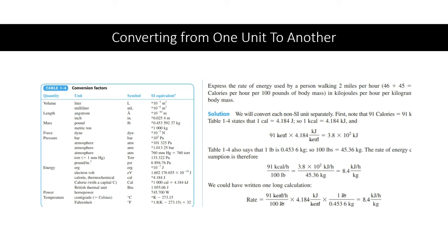Converting from one unit to another can be problematic if you're not given a table for units that are not based on multiples of 10. For example, in pressure and temperature, you have bar and atmosphere — those are clearly not based on multiples of 10, which is the prefix system we talked about. Instead, they have their own numbers that are determined experimentally. If you're going to have problems with this, you need a table where you can look up what they're equivalent to.